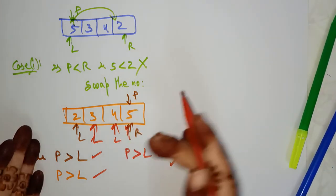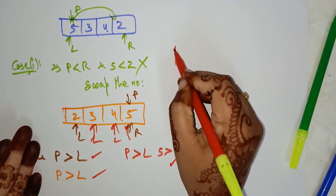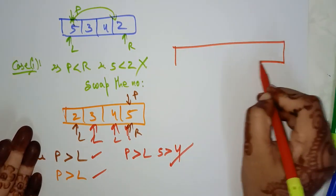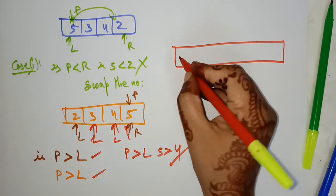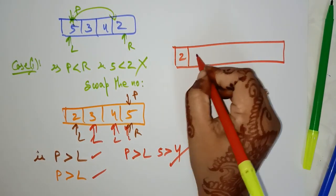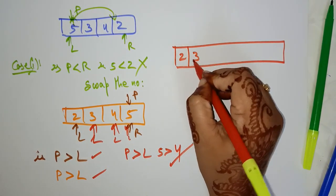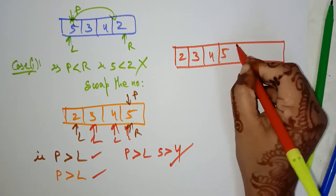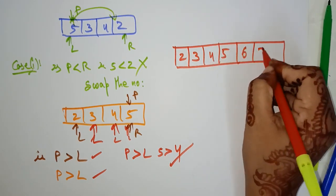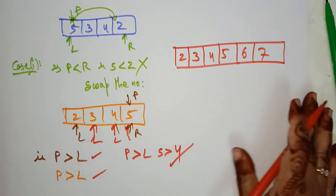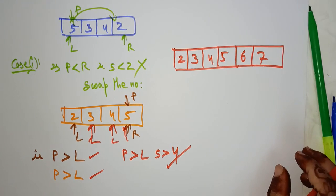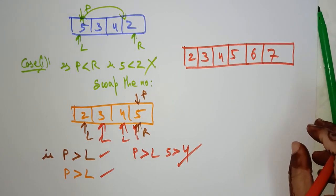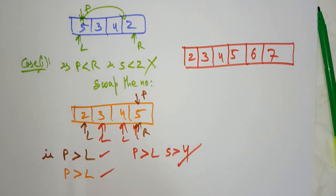After sorting, you merge the complete result — this is divide and conquer. The final array is 2, 3, 4, 5, 6, 7. This is the final array after sorting by applying the quicksort algorithm. Thank you.